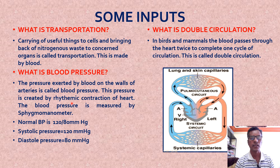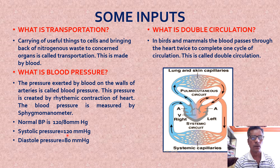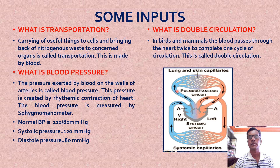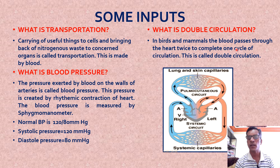Blood pressure is created by the rhythmic contraction of the heart. It is measured by a device called the sphygmomanometer. The normal blood pressure of a healthy person is 120/80, where 120 is the systolic pressure - on contraction - and 80 is the diastolic pressure - when the heart relaxes. What is double circulation? In birds and mammals, the blood passes through the heart twice to complete one cycle of circulation - this is called double circulation.